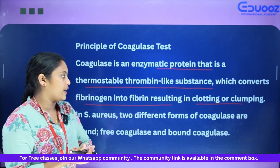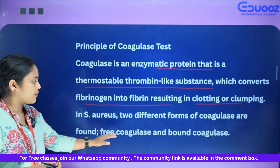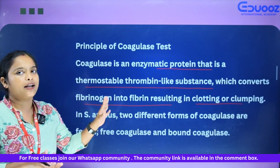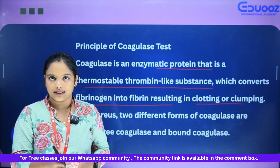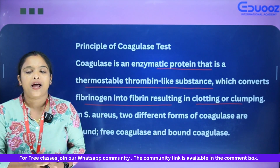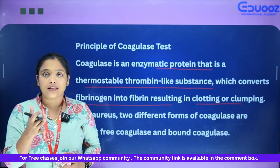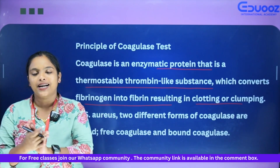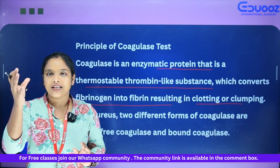In Staphylococcus aureus, two different forms of coagulase are found: free coagulase and bound coagulase. This is the principle of the coagulase test — it is an enzymatic protein, a thermostable thrombin-like substance that converts fibrinogen into fibrin, with clotting and clumps formed.